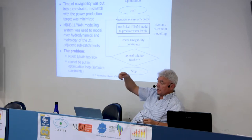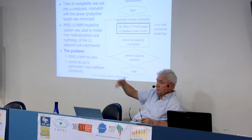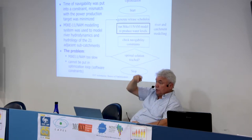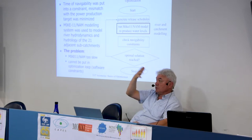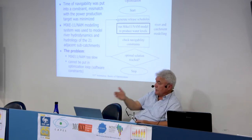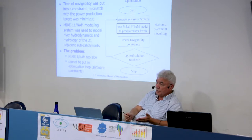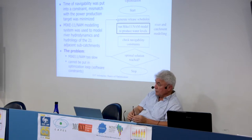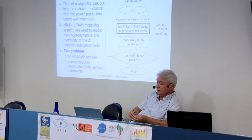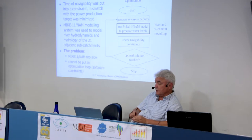In dynamic programming, to calculate the quality of each solution you need to run Mike-11. You generate all multiple scenarios of releases, feed them into the model, run it, calculate depth, check for how many months depth is above two meters, judge if the constraint is satisfied, and calculate hydropower production. For hydropower you don't need Mike-11, but to calculate depth you do.